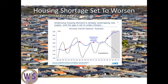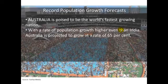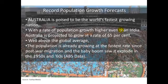So the housing shortage in Australia is set to worsen. This graph shows the completions of dwellings, which absolutely dropped in the GFC — the builders and developers weren't getting enough finance to complete dwellings. That has corrected a bit; this graph is from 2010. But demand is still shooting through the roof and we have not caught up. The record population growth continues. Australia is actually poised to be the world's fastest growing nation, with a rate of population growth projected at 65% above the global average. The population is already growing at the fastest rate since the post-war migration and the baby boom of the 1950s and 60s.